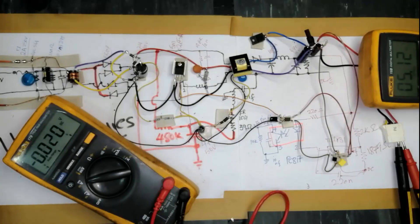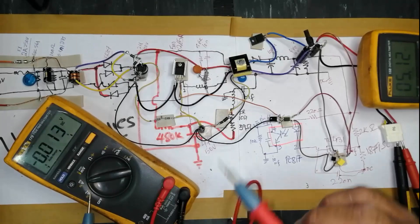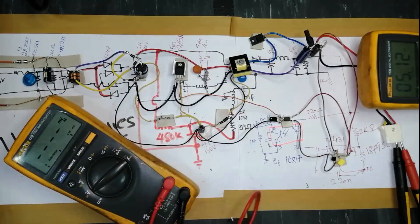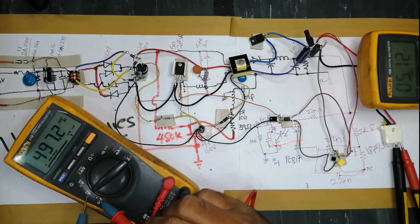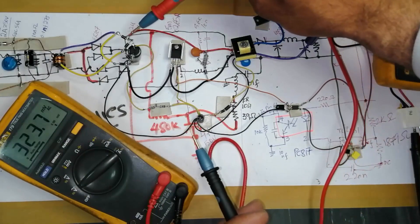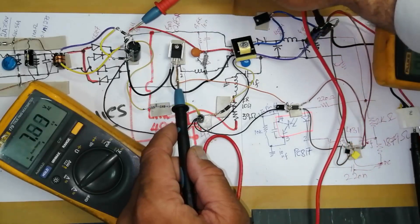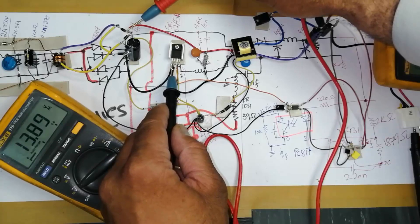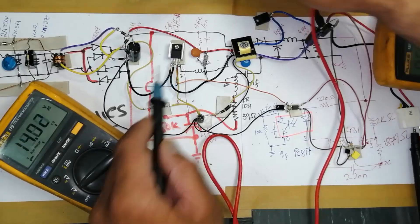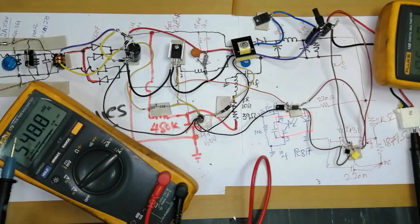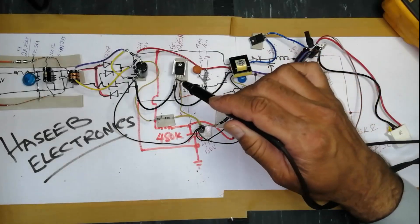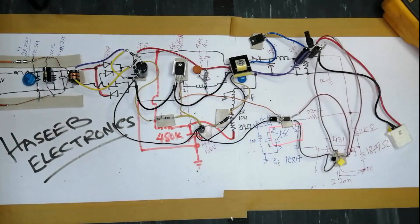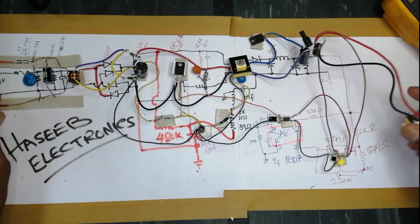If you want to check if there is switching or no, set multimeter to volt AC, connect one pin to positive voltage side and second pin to pin number two. This time it is making 13 volt AC. 13 volt AC switching is there, and you can check frequency here. After that, now I will remove the circuit.